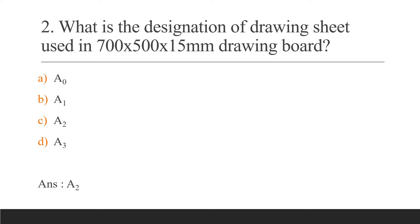Next question: What is the designation for the drawing sheet used in a 700×500×15mm drawing board? The drawing board size is 700×500×15mm. That designation is A2.